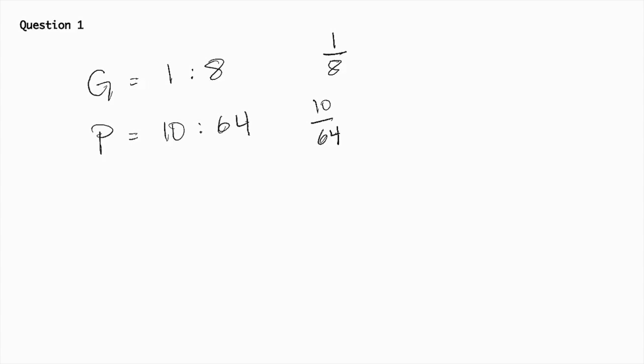Finally, we have to compare the fractions using the least common denominator of 8 and 64, which is 64. We don't have to change Philip's, but we do have to change George's. Over 64: 8 times 8 is 64, so 8 times 1 is 8.